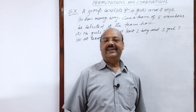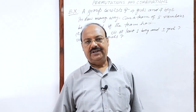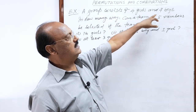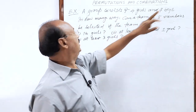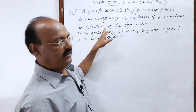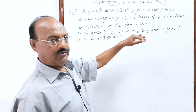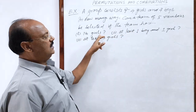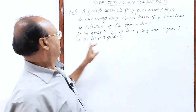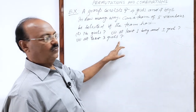Welcome students. Let us see a very interesting question from the chapter permutations and combinations. A group consists of four girls and seven boys. In how many ways can a team of five members be selected? If the team has — there are three parts of the question. First part: no girls. Second: at least one boy and one girl. And third: at least three girls.